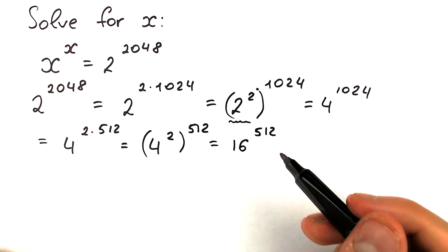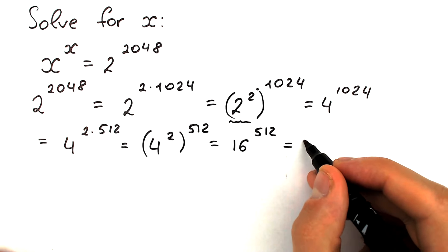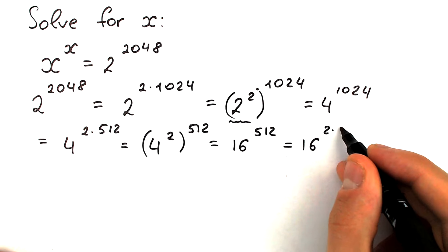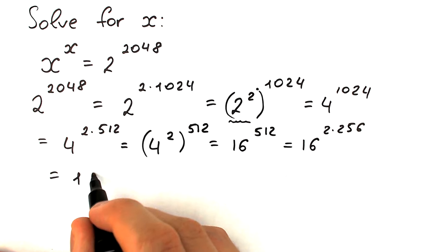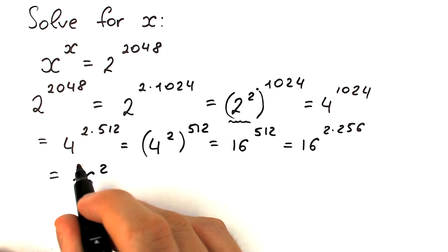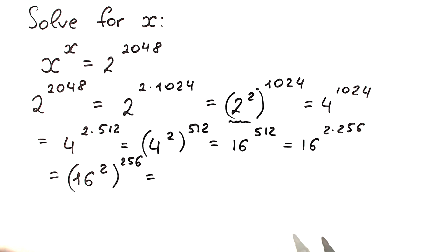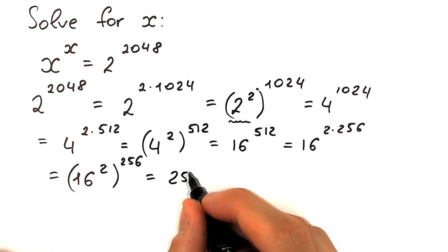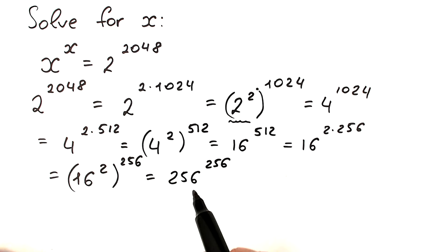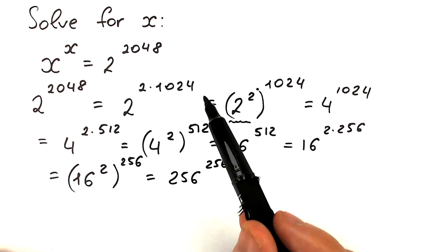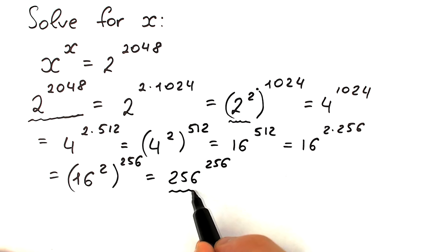We still don't have the same base and same exponent, so let's do this step once more. We have 16 to the power — let's divide the exponent by 2 — so 2 times 256. Now let's bring the 2 inside parentheses: we have 16 squared, raised to the power 256. Since 16 squared equals 256, we now have 256 to the power 256. And we have the same base and the same exponent — 256!